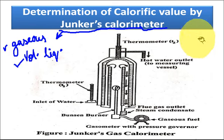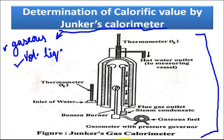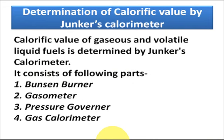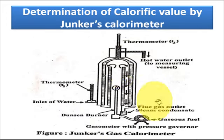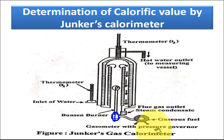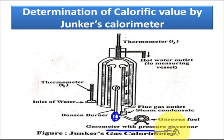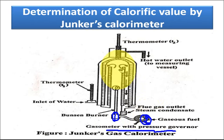This is the construction of the Junkers calorimeter. The main parts are: the Bunsen burner, the gasometer, the pressure governor, and the gas calorimeter. Looking at the figure, this is the Bunsen burner, this is the gasometer with pressure governor, and this is the gas calorimeter.